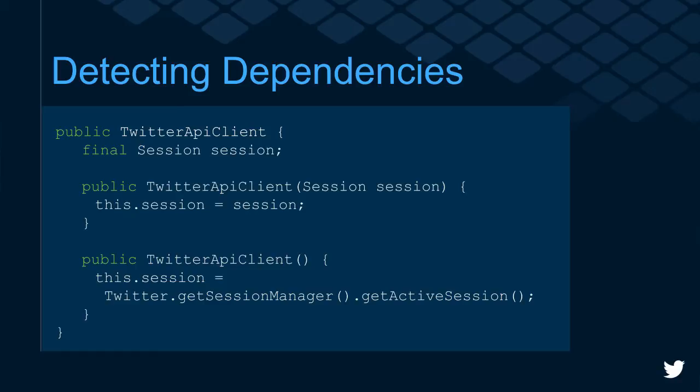Another good example is detecting dependencies. We have the TwitterApiClient class, whose responsibility is to make Twitter API calls. For that it needs a session. We give the developer the opportunity to pass the session through the constructor, but if they don't want to, we get the active session from the session manager inside Fabric. You might ask why we don't use a dependency injection framework — that's a great suggestion for an app, but a key quality of a good SDK is being lightweight, so we can't take on extra dependencies that easily.